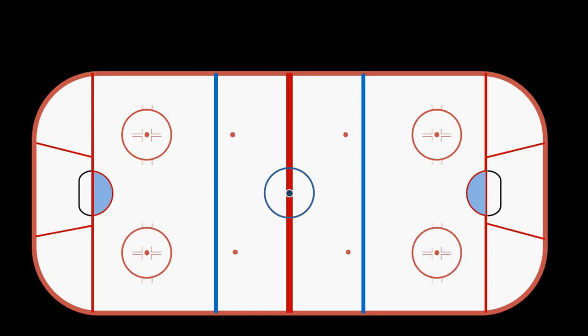The first thing you'll notice about the rink is that it's a mirror image — both sides are exactly the same. There are a lot of lines and dots and circles going on, so let's break them down. First is this red line in the middle, which is shockingly called the red line. The red line doesn't come into play a ton, so for now all you really have to know is that it's called the red line and it's in the middle.